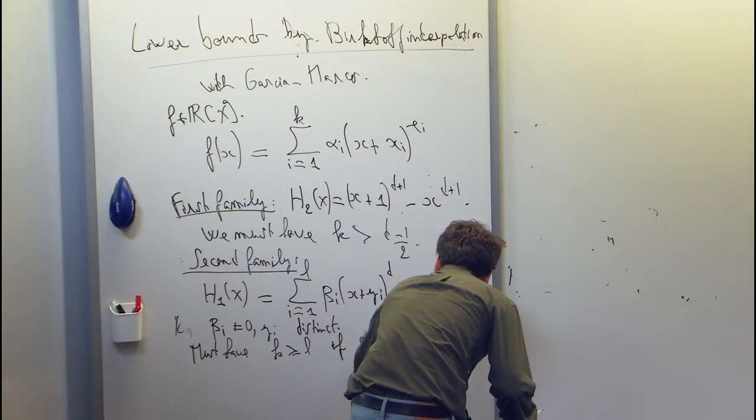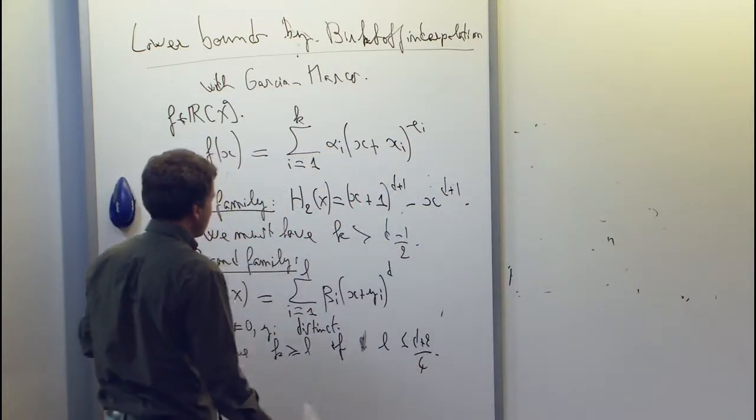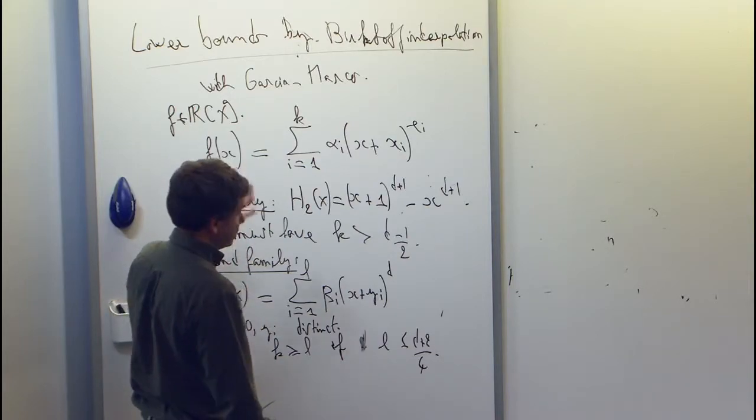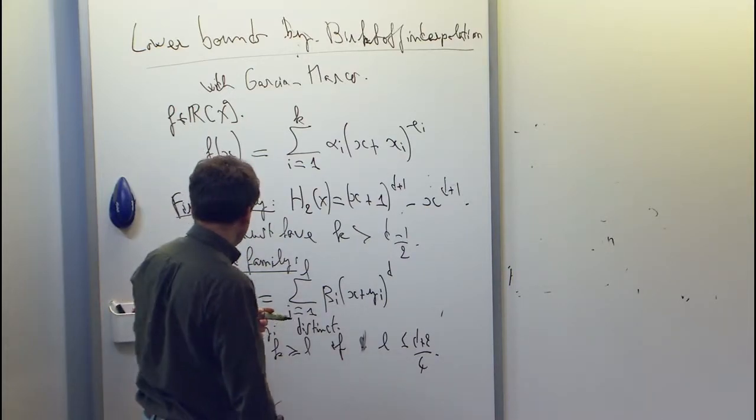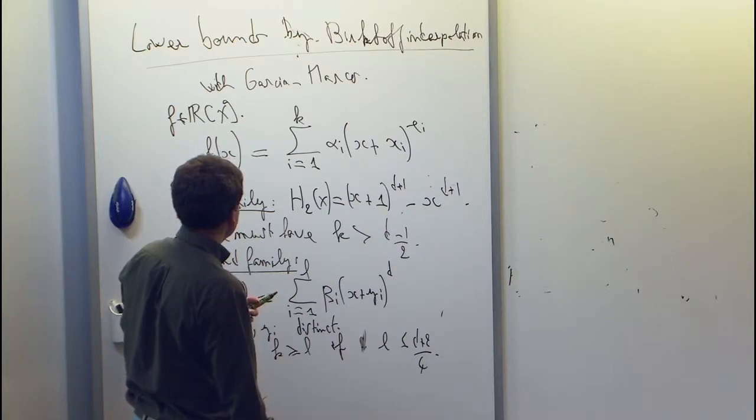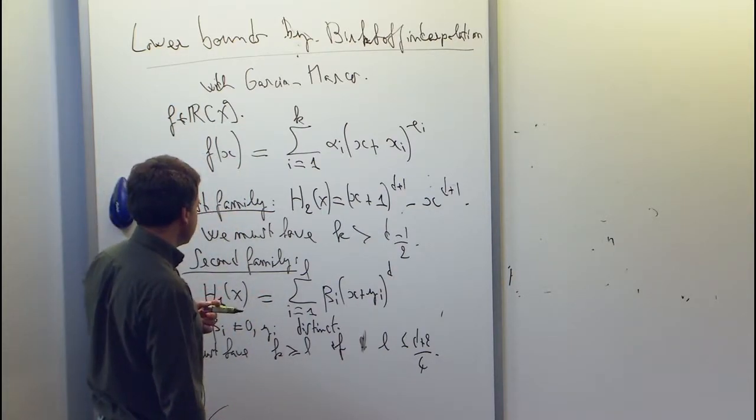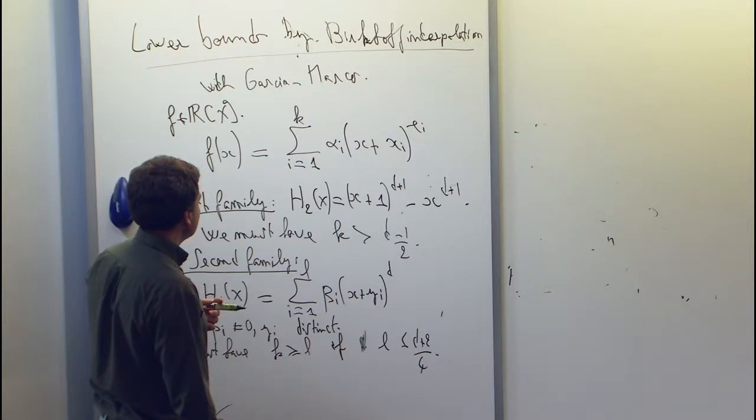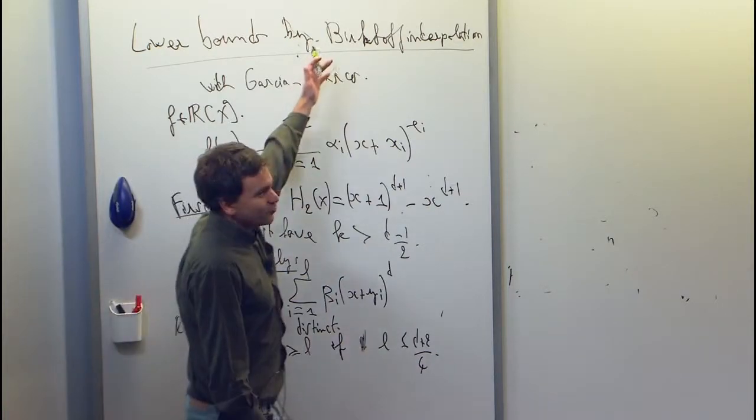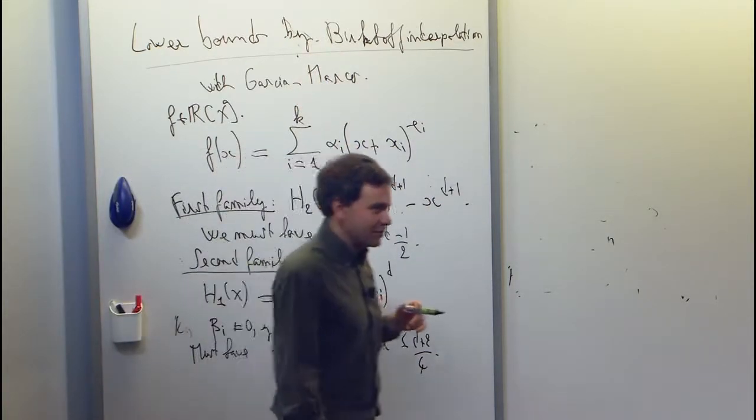So anyway, this gives again a lower bound of order d. So I'll try to tell you a little bit about the motivation for this in the previous work, and also what's the proof technique and what's the Birkhoff interpolation, if I have the time.